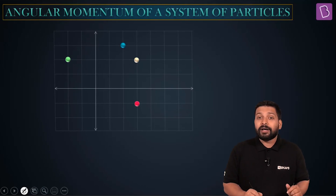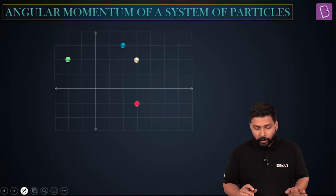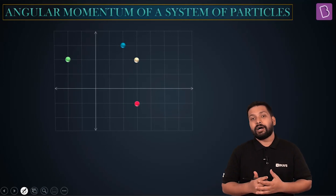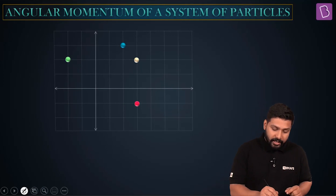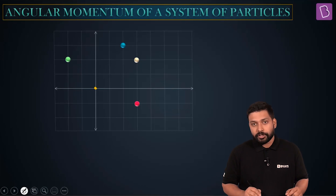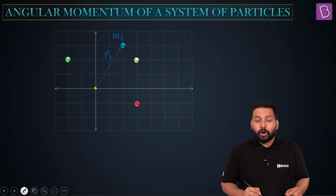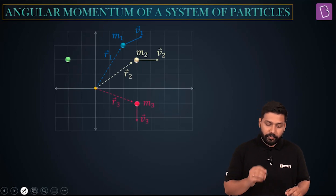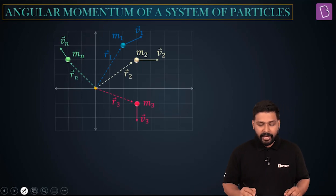What if there are discrete particles — small point masses? How do you find the angular momentum of all these about the central point, that is about the origin? What you have to do is draw all the position vectors. For the first one it's R1, it's moving with V1, mass is M1, and this is M2.